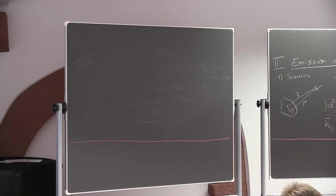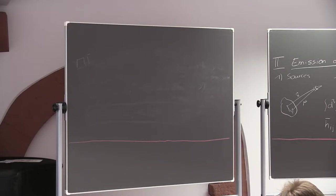Gravitational wave signals are only proportional to the quadrupole moment. You can have things that look like they're massively affecting gravity, but if there's no quadrupole moment, there are no gravitational waves. That's why we need two black holes — a black hole merger — to see something in LIGO. A single black hole flying through space: nothing.